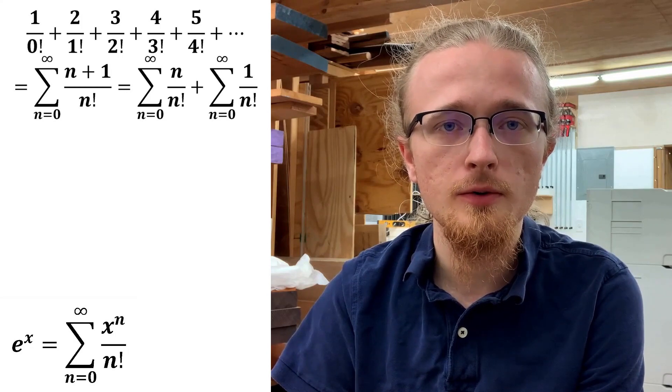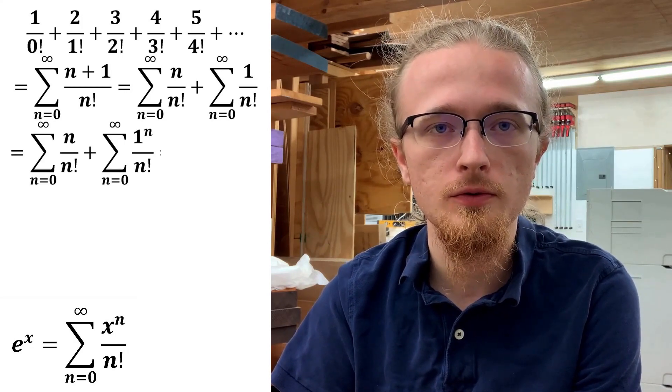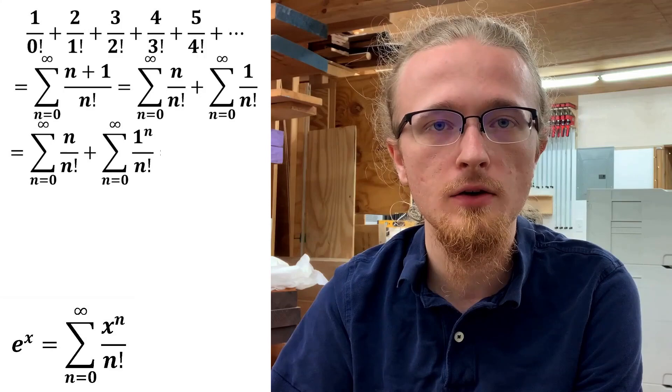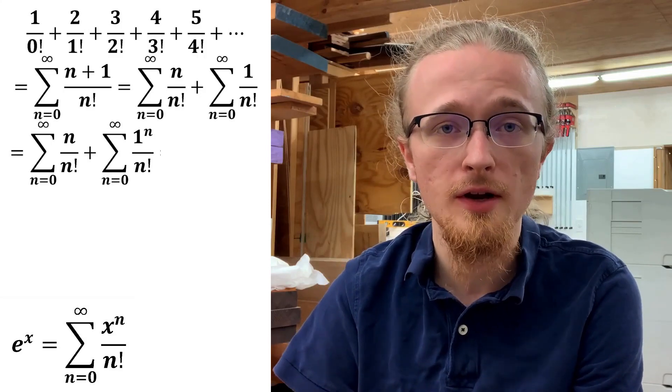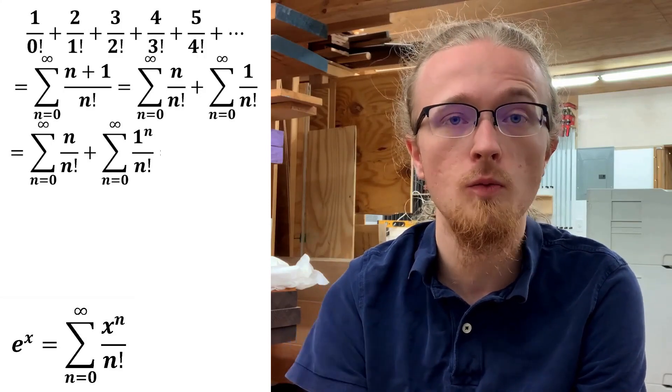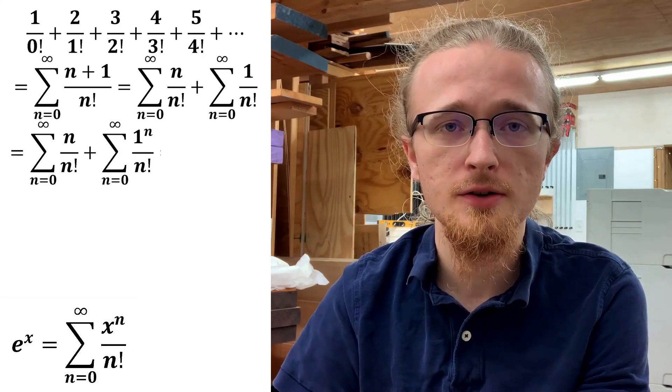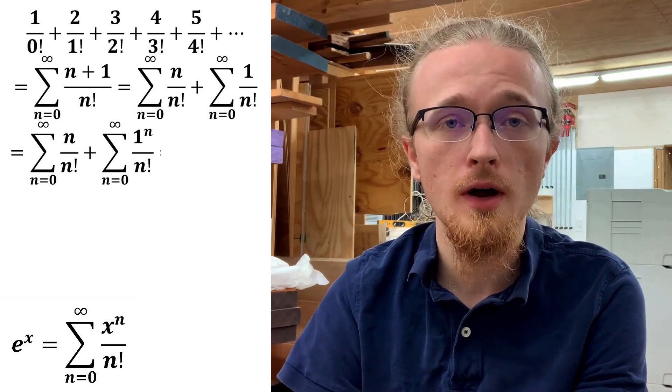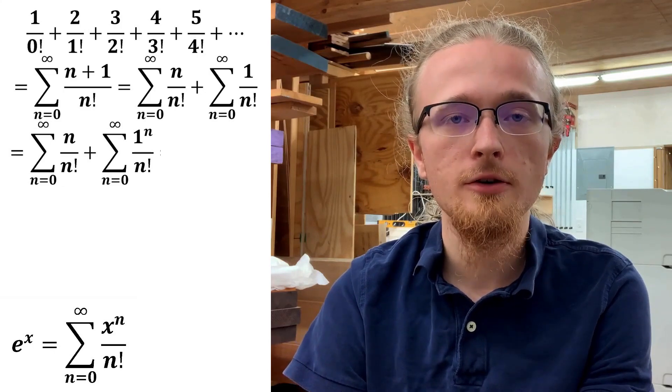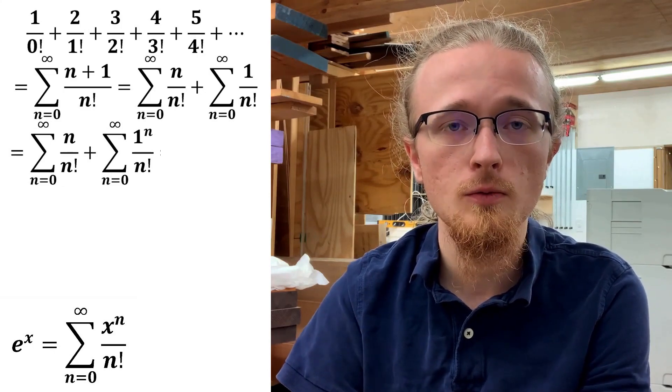Specifically, we can rewrite the second term as the sum from n equals 0 to infinity of 1 to the n over n factorial, because 1 to any power is just 1 again, but that's simply the Taylor series expansion of the natural exponential evaluated at x equals 1, so we see immediately that that term in the series just equals e to the 1, or e.